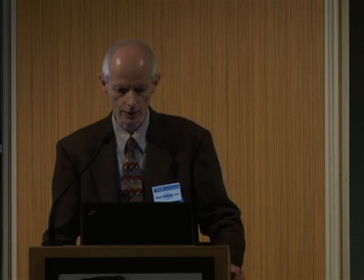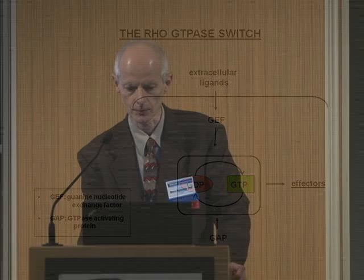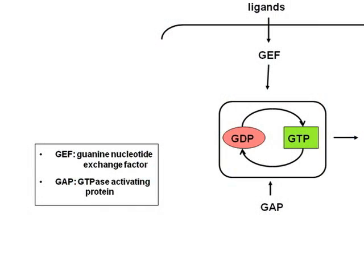The RAC GTPase is a member of the Rho family, and like many other members, they essentially act like switches. The GTPase binds to a guanine nucleotide: in the GDP-bound state the switch is off, and in the GTP-bound state the switch is on, enabling signal transduction from extracellular ligands to various effectors. The switch is controlled by two sets of proteins — GEFs, or guanine nucleotide exchange factors, which kick out the nucleotide and replace GDP with GTP, thereby activating the switch.